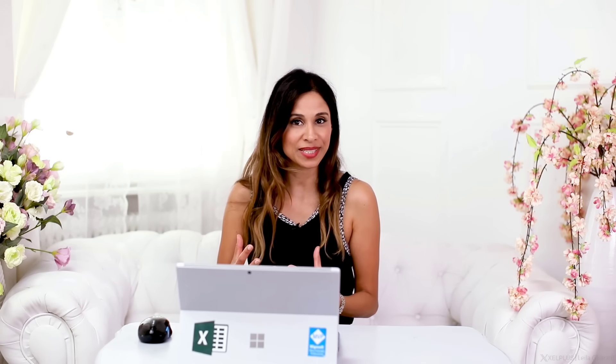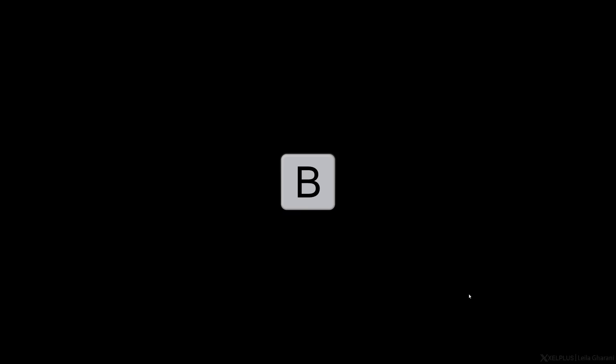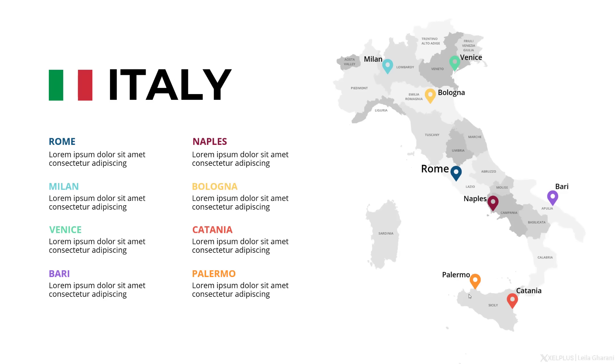Here's a simple but useful bonus tip. While you're in slideshow mode, press the B key to black out the screen or the W key to white it out — great if you have an important message and want the undivided attention of your audience. Then hit any key to return to the presentation.